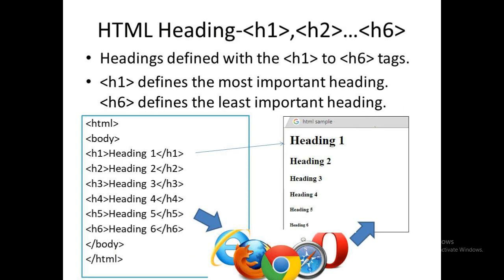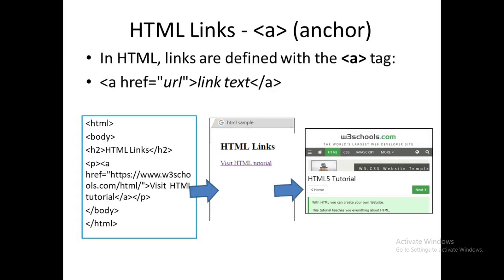Next are tags about headings. The head tag doesn't tell you about the heading — it is only about information on the web page. For headings, we use H1, H2, H3, H4, H5, and H6 tags. The H1 tag defines the most important heading — the biggest — and H6 defines the least important heading, the smallest. This is the example and the result as a web page.